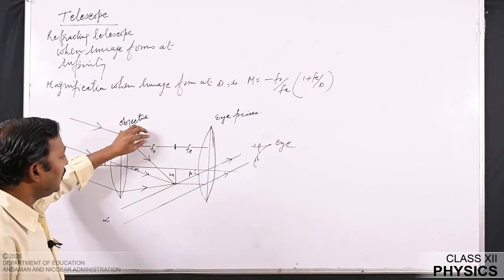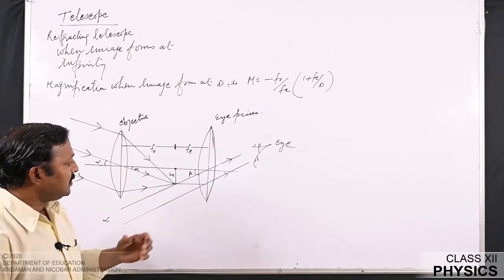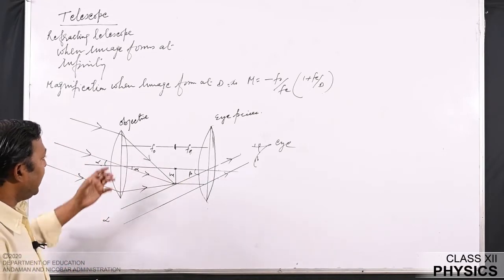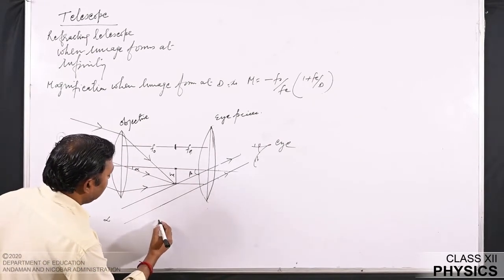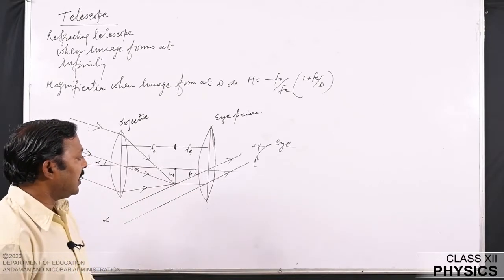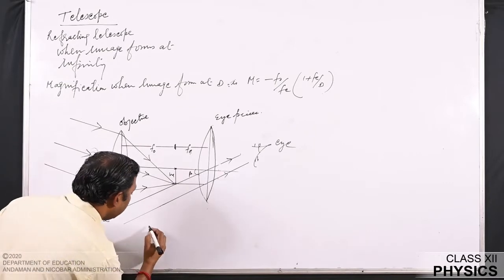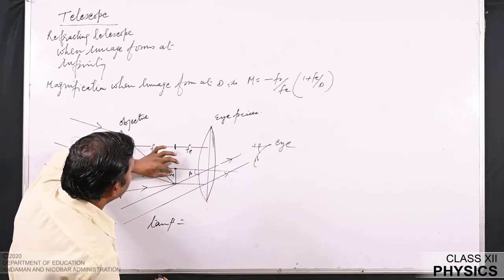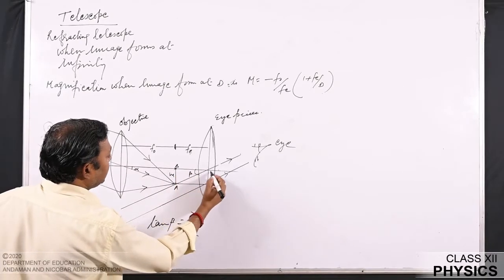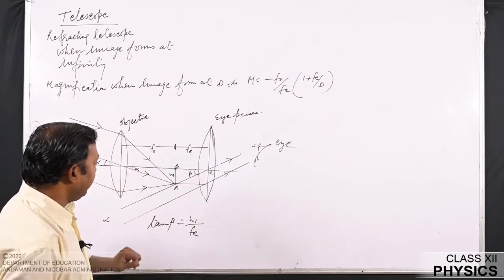The image formed by the objective falls on the focus point of the eyepiece, so the eyepiece realizes the object is at its focus point and the final image forms at infinity. From the figure, tan β = h1/Fₑ from triangle ABE. Similarly, from triangle BOA, tan α = h1/F₀.